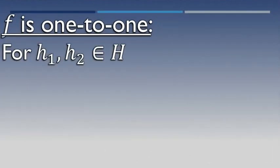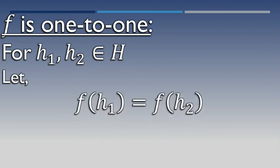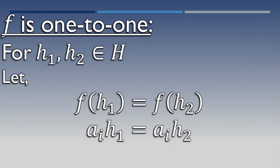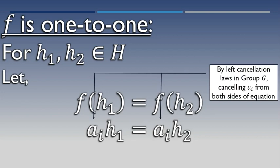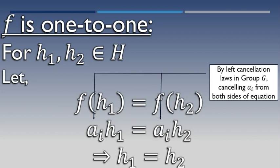First we prove f is one-to-one. Consider h1, h2 belonging to H. Assume f(h1) = f(h2). Since f(h) = aih, we get aih1 = aih2. By the left cancellation law in the group, cancelling ai from both sides, we get h1 = h2. Thus f(h1) = f(h2) implies h1 = h2, so f is one-to-one.